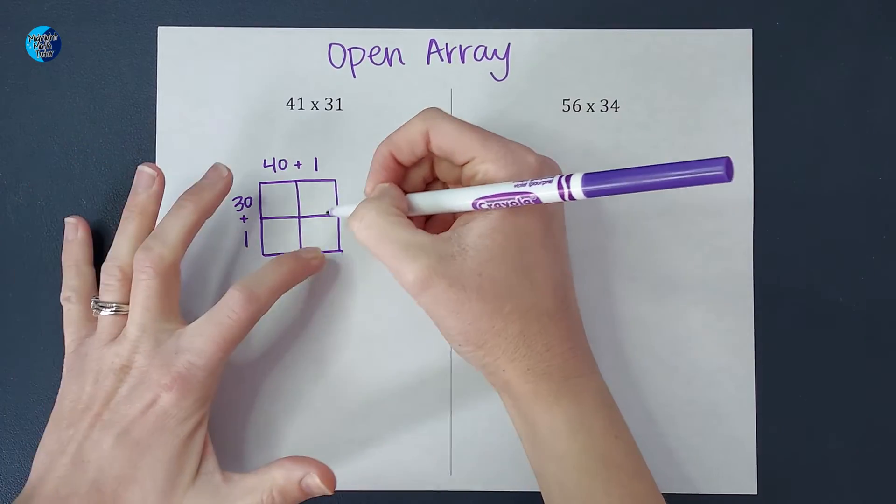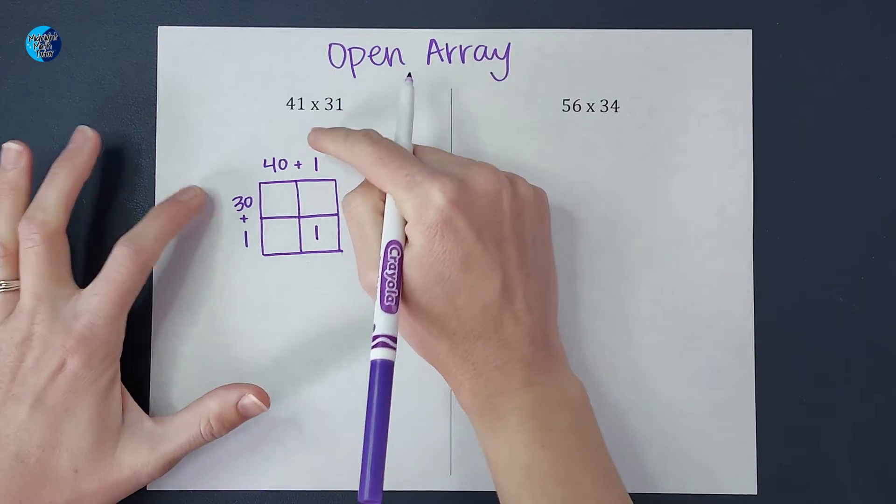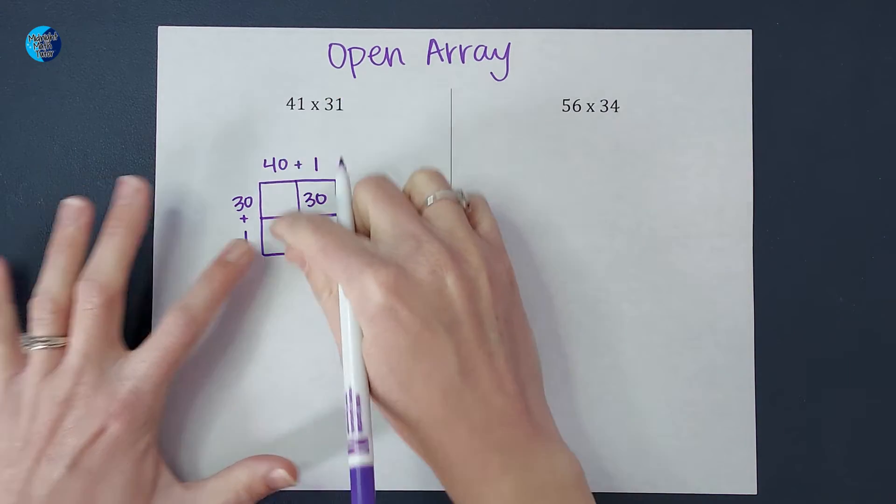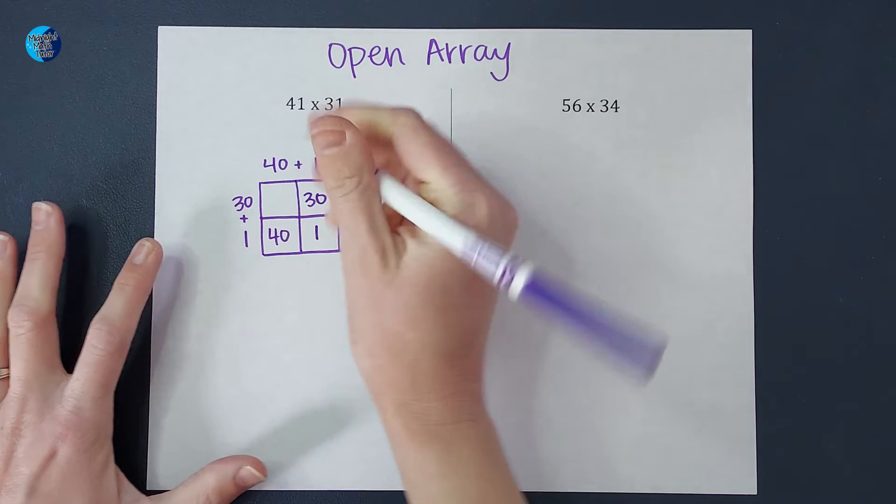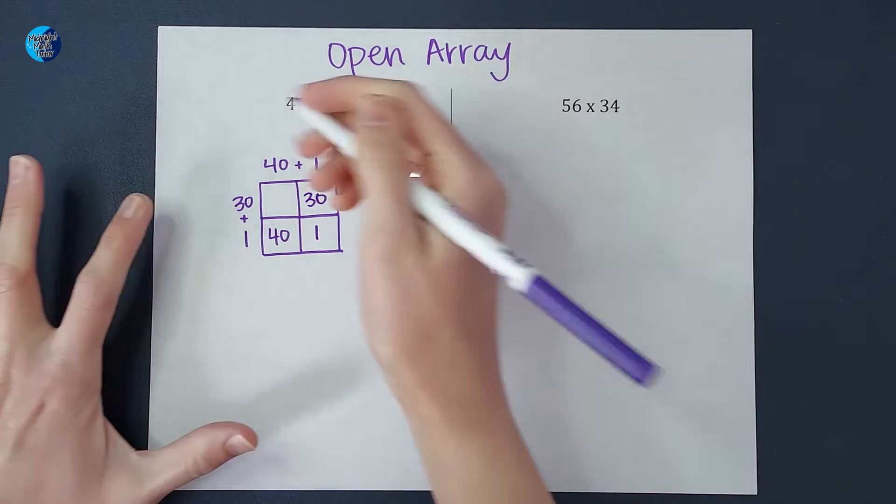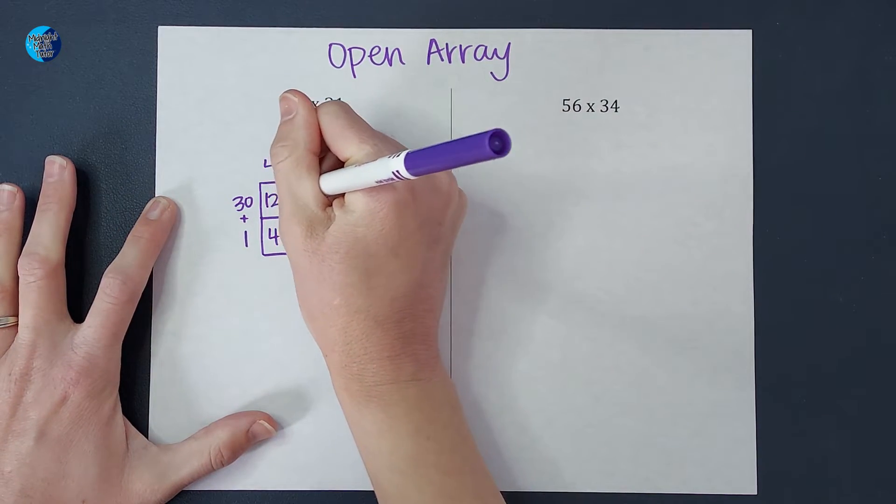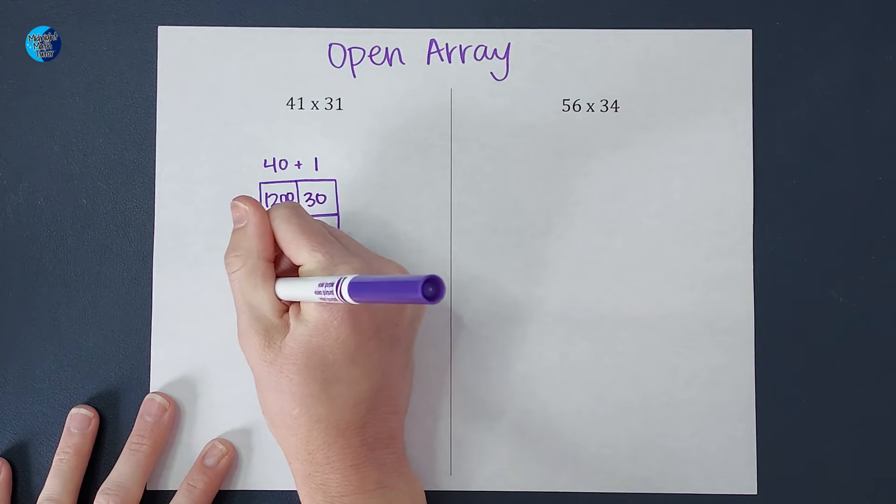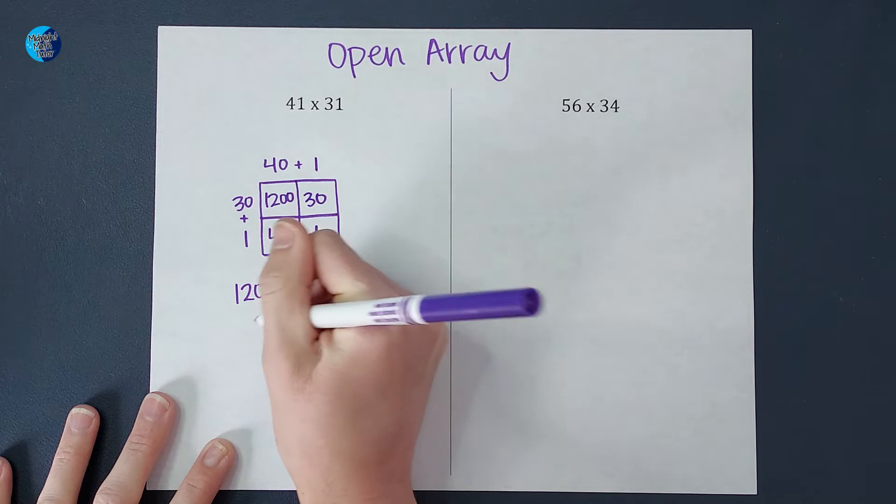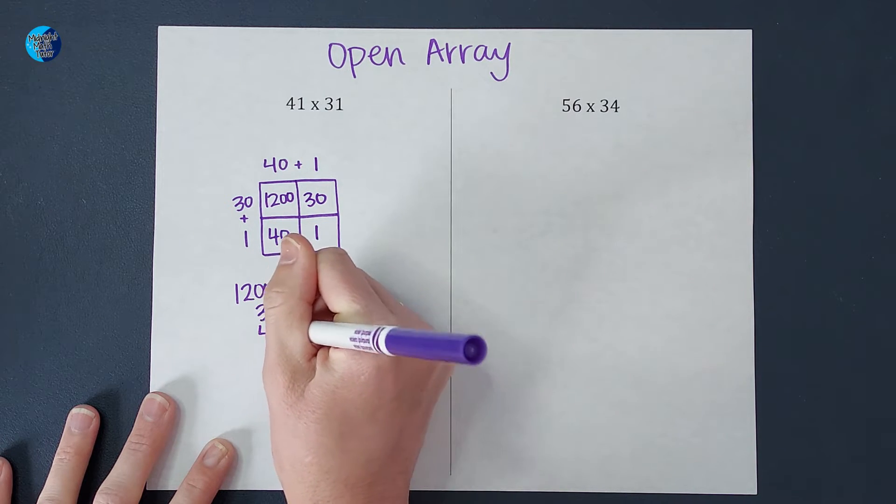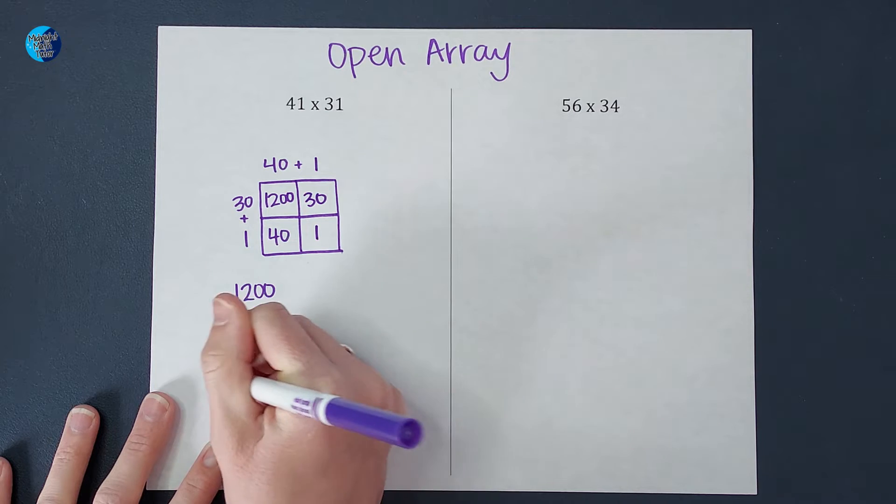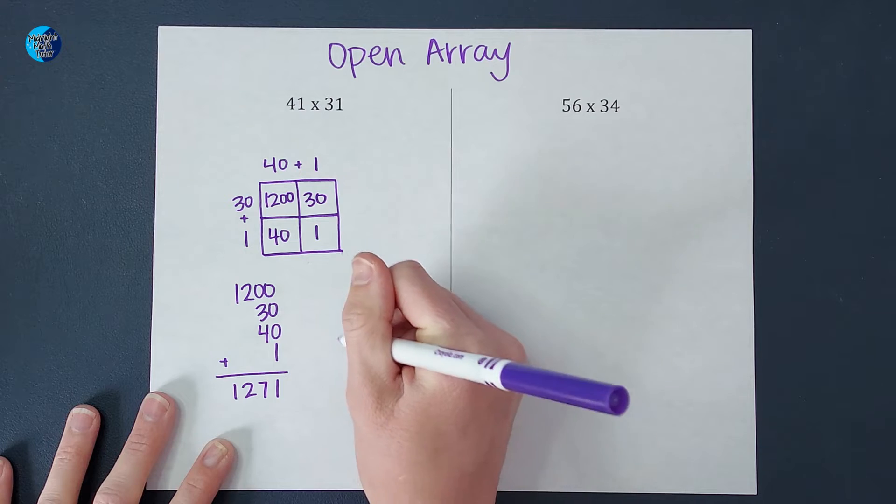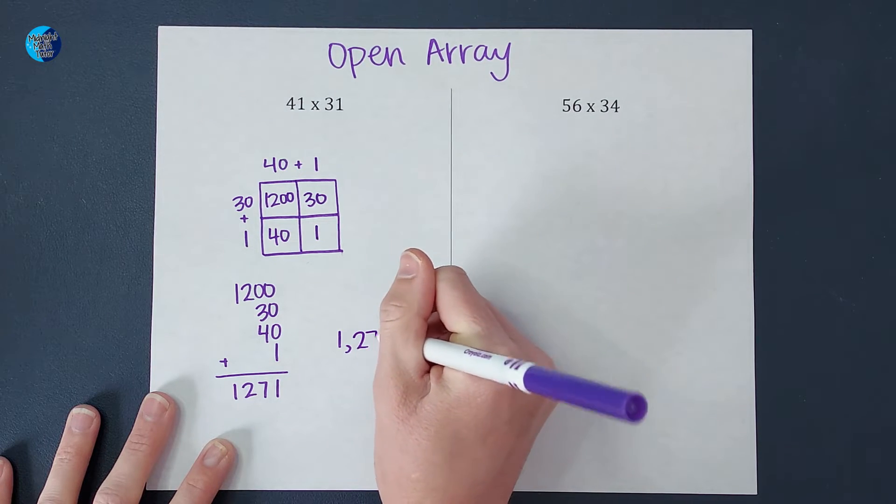Let's start with one times one, which is one. One times 30, which is 30. 40 times one, which is 40. And 30 times 40, which gives me 1200. Then I add these all together: 1200 plus 30 plus 40 plus one. And I end up with 1,271.